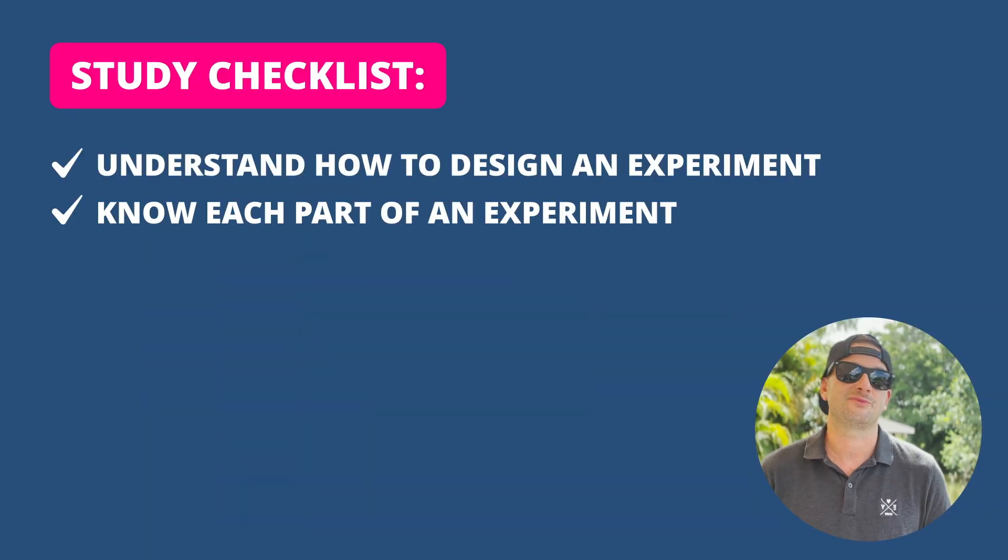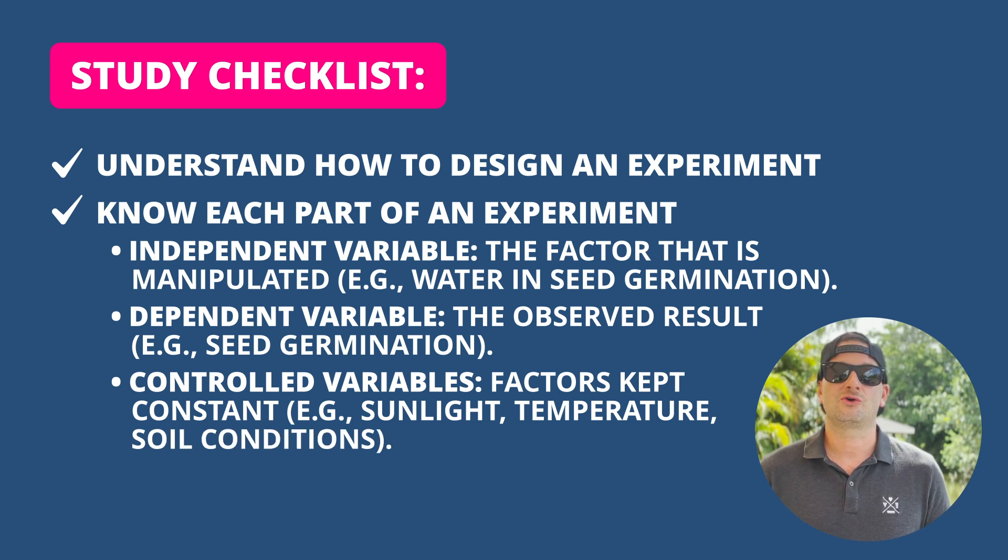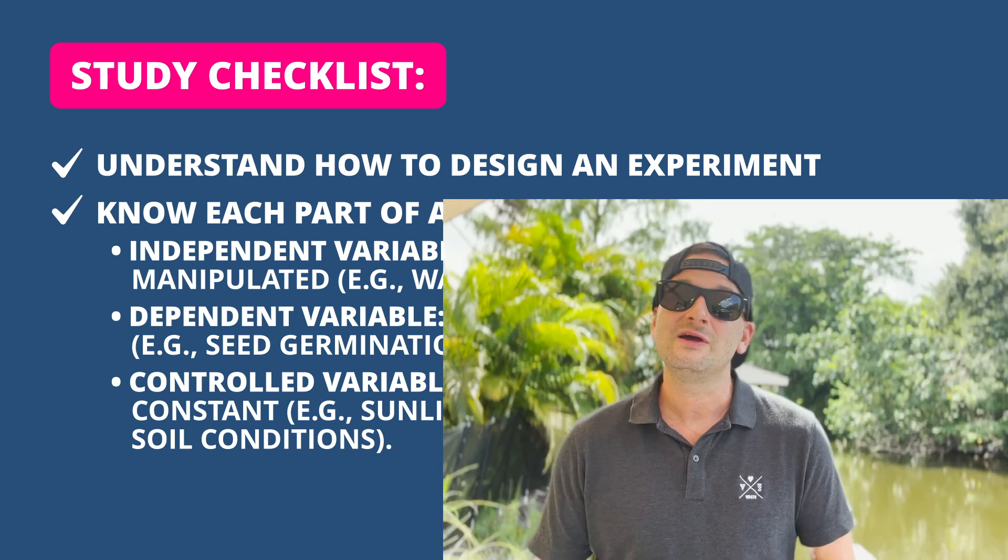When it comes to designing an experiment, you need to know each part. You might encounter a question that describes an experiment and asks you to identify the independent variable or the control group — you need to have that down pat. The independent variable is the factor that is manipulated — the thing we're changing to see how the result changes. An example: water and seed germination — having it or not having it, what happens? The dependent variable is the observed result, like seed germination. Controlled variables are factors kept constant, such as sunlight, temperature, and soil conditions.